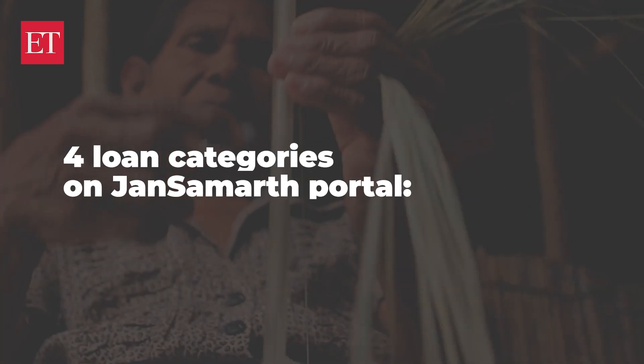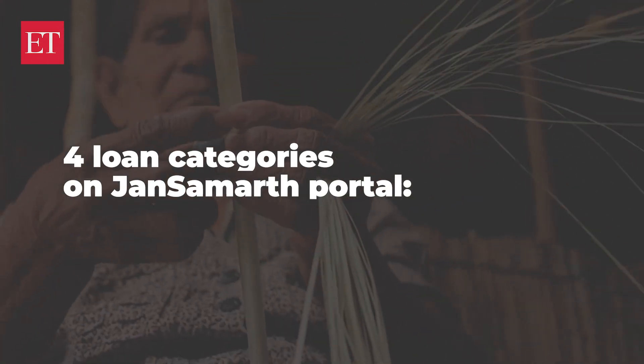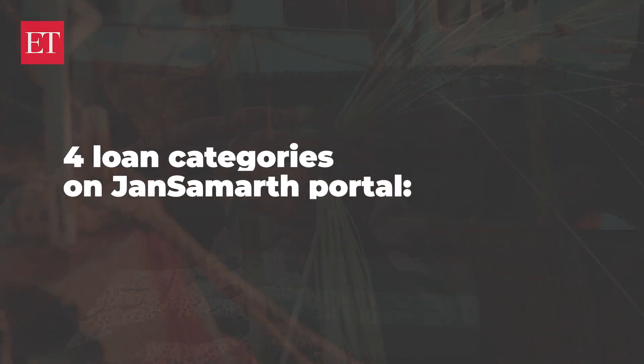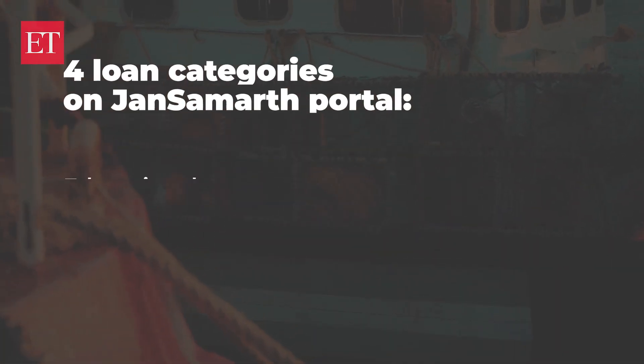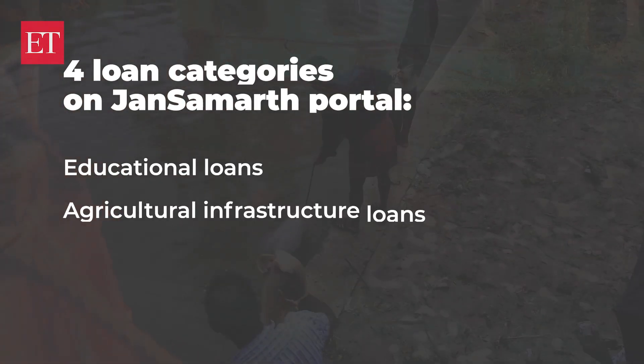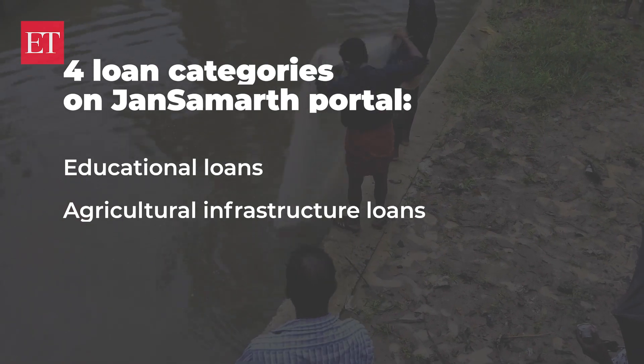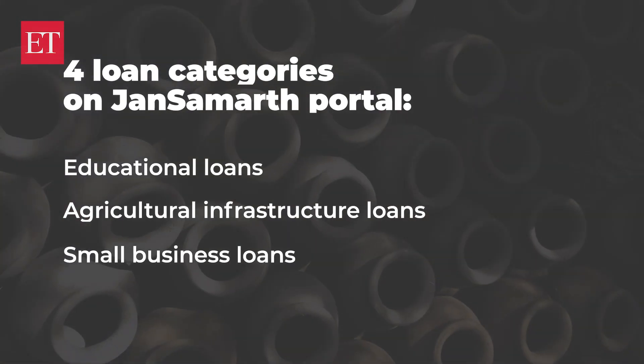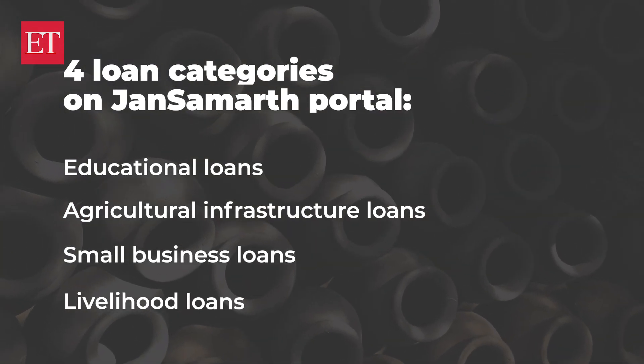There are four main loan categories available on the Jan Samarth portal: educational loans, agriculture infrastructure loans, small business loans, and livelihood loans. Twelve different credit schemes fall under these categories, so you have plenty of options to choose from.